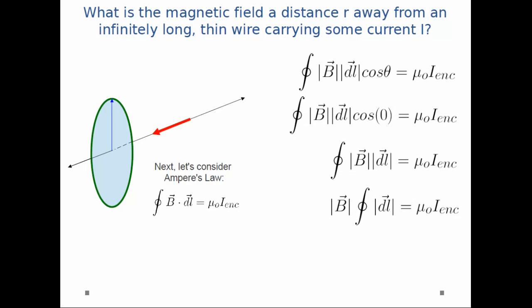And finally, I'm going to sum up all the tiny little pieces DL. Now, what does that mean? I'm going to take every tiny little path and go around the entire circle. That means I'm going to have a total length of 2πr. That's the circumference of my circle.